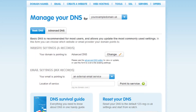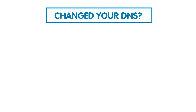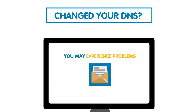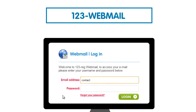If you are still having trouble, then you will need to contact your email provider. Please remember, if you have made any changes to your DNS, including changing your name servers or MX records, then this can take up to 48 hours to become active, meaning that you may still experience problems with your email until these changes have been propagated over the internet. You should be able to send your emails using 123 Webmail once these changes have propagated.